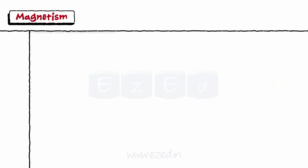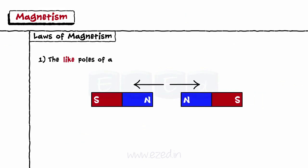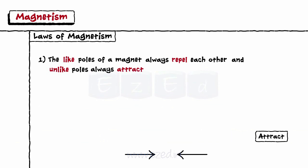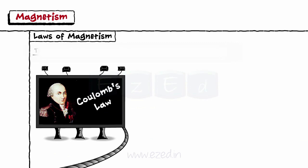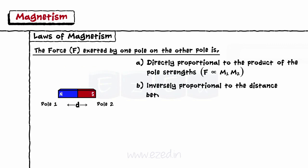Let's study the laws of magnetism. The first law states that the like poles of a magnet always repel each other, and unlike poles always attract each other. The second law is Coulomb's law. It states that the force exerted by one pole on the other pole is directly proportional to the product of the pole strengths, inversely proportional to the distance between them, and also depends on the nature of the medium surrounding the poles.